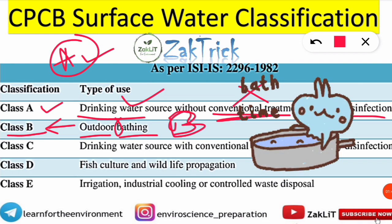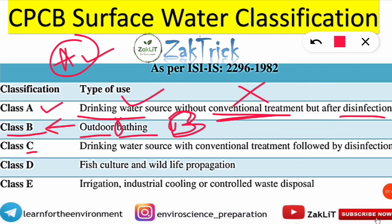Coming to Class C: C means conventional treatment is required. So Class C water can be used for drinking, but only after conventional treatment. C stands for conventional.